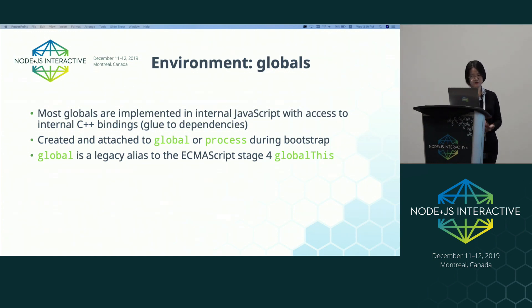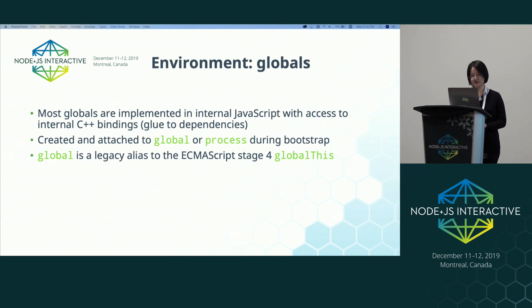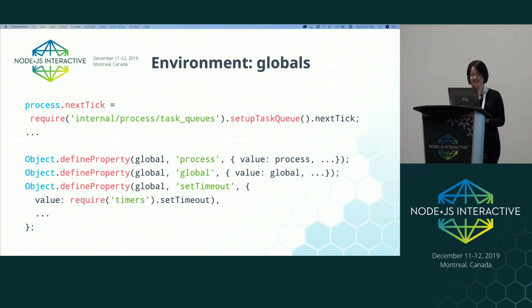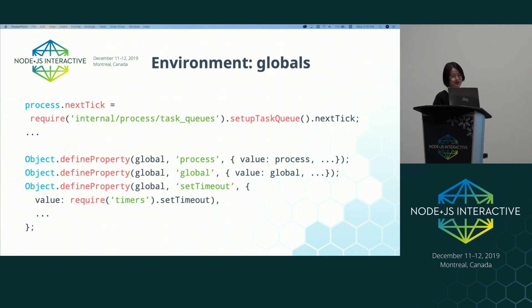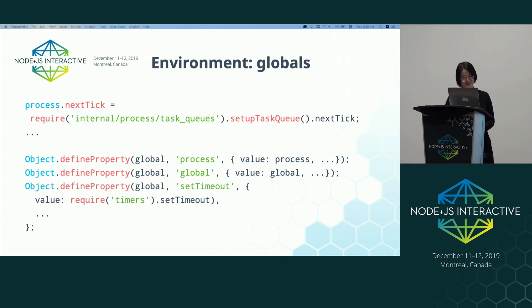After we have an internal loader system set up, Node can start initializing the globals, which are implemented in internal JavaScript with access to internal C++ bindings. These globals are then attached to the global object or the process object. In Node, the global object is now a legacy alias to the ECMAScript-stage globalThis object.